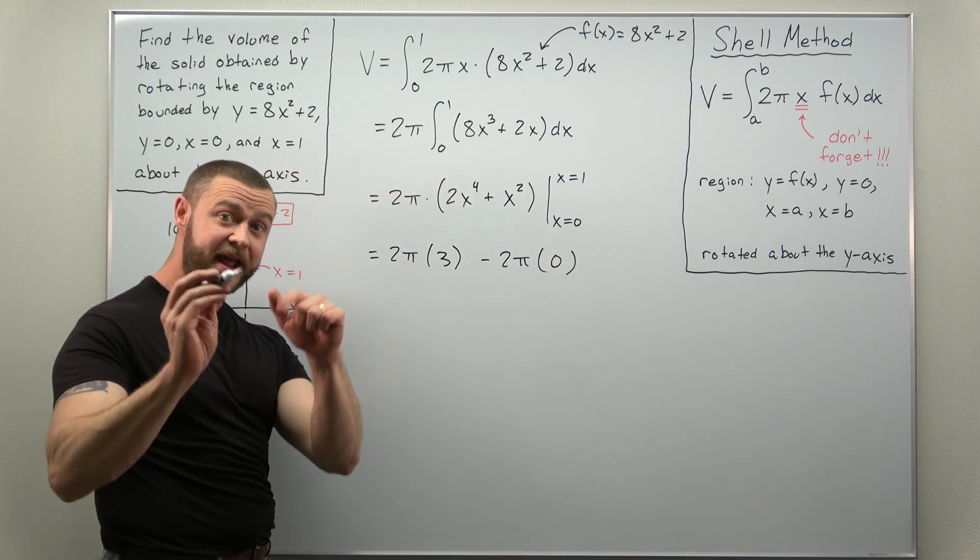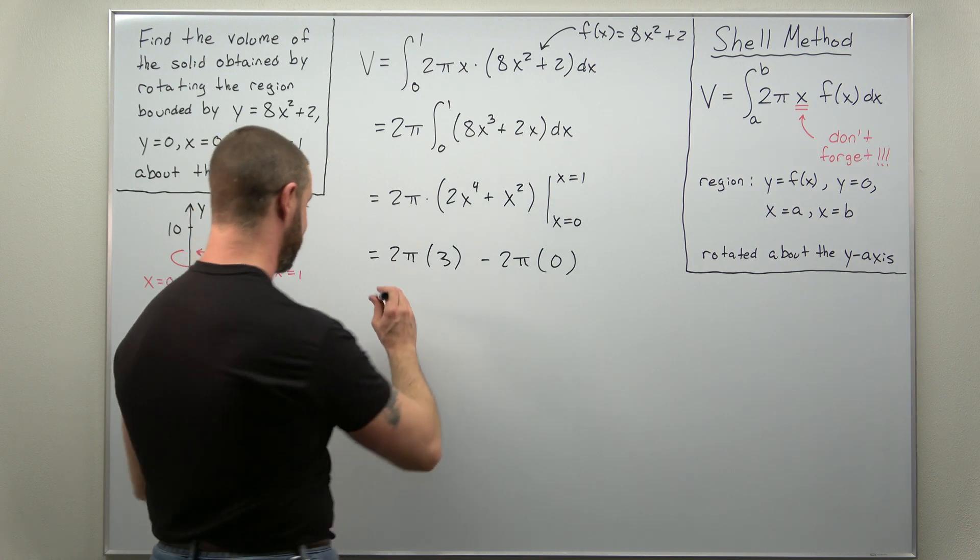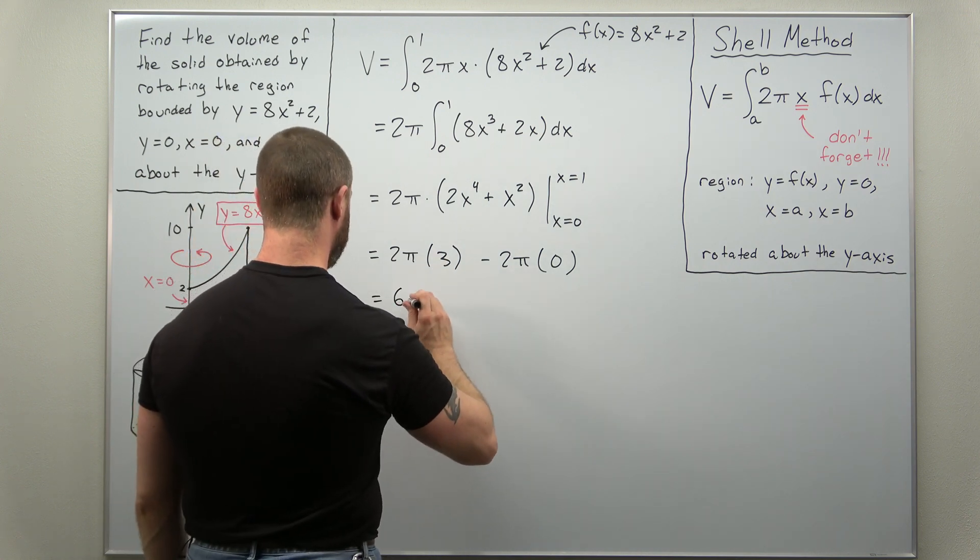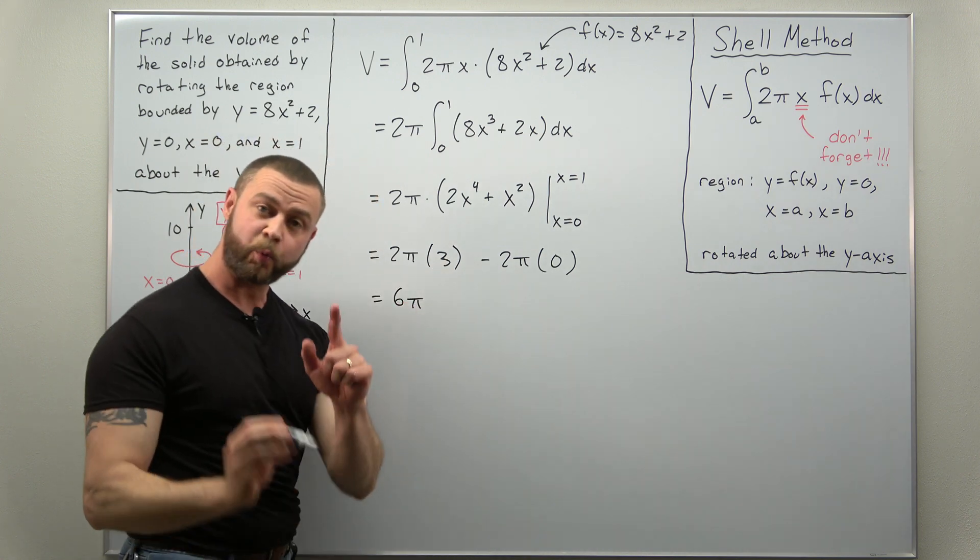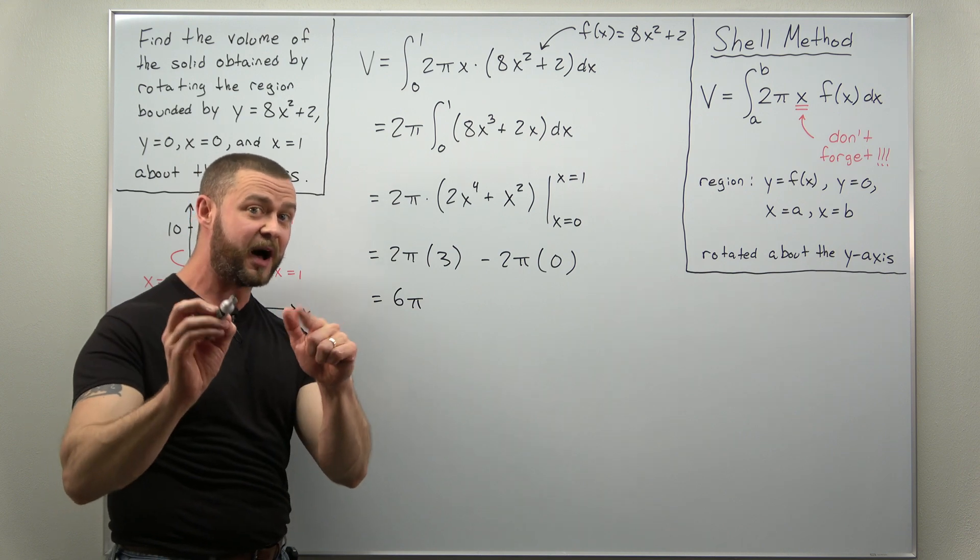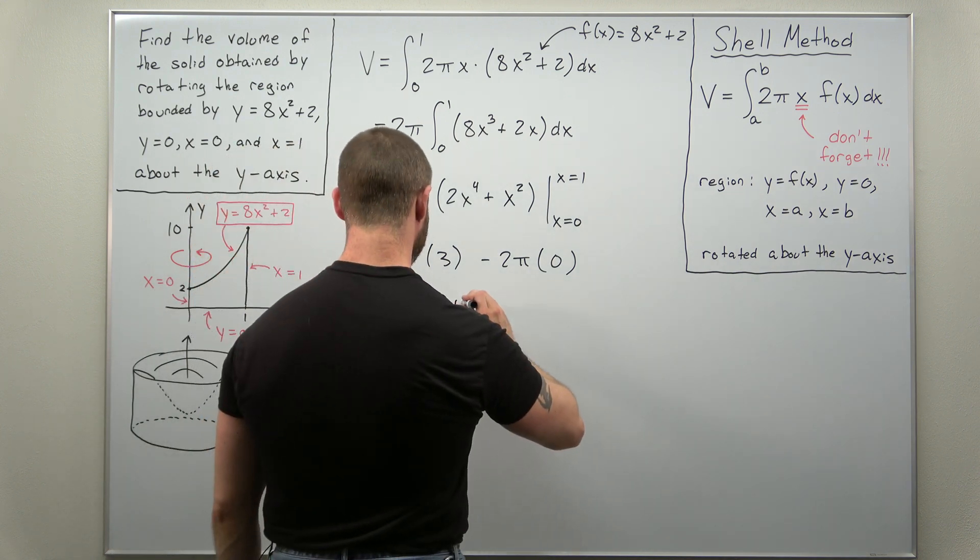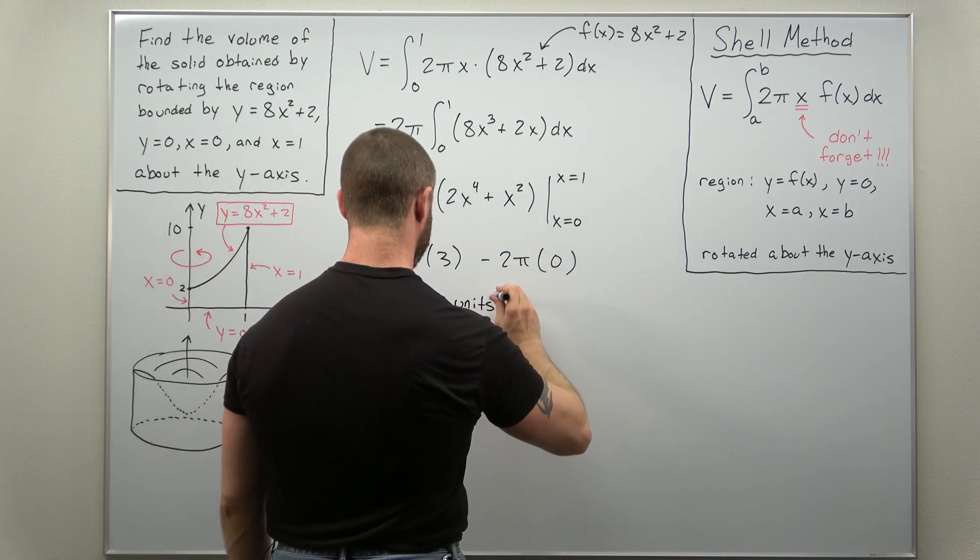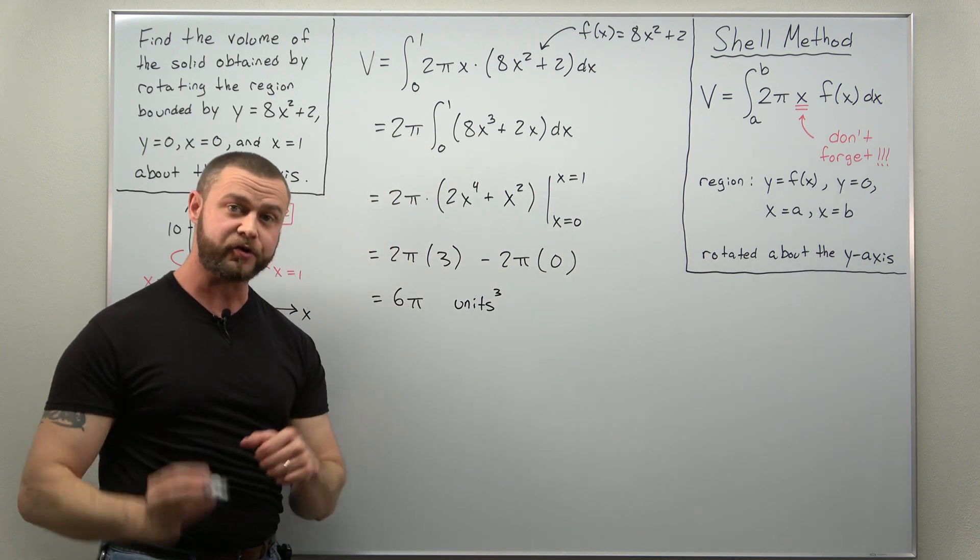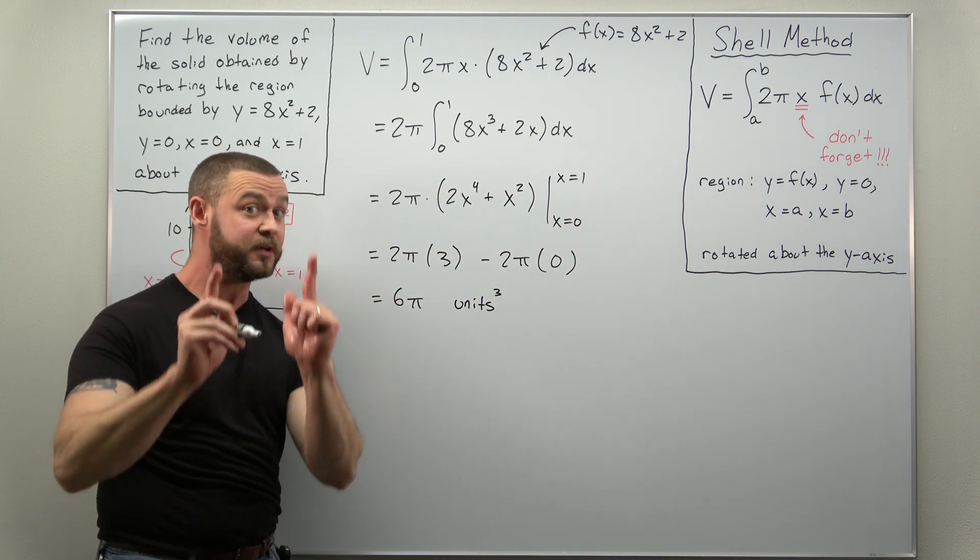And it looks like what we get as our answer for the volume by using the shell method, we get 6 pi here. And it's worth pointing out this is 6 pi units cubed. And whatever units you're using it would be those units cubed to denote the volume.